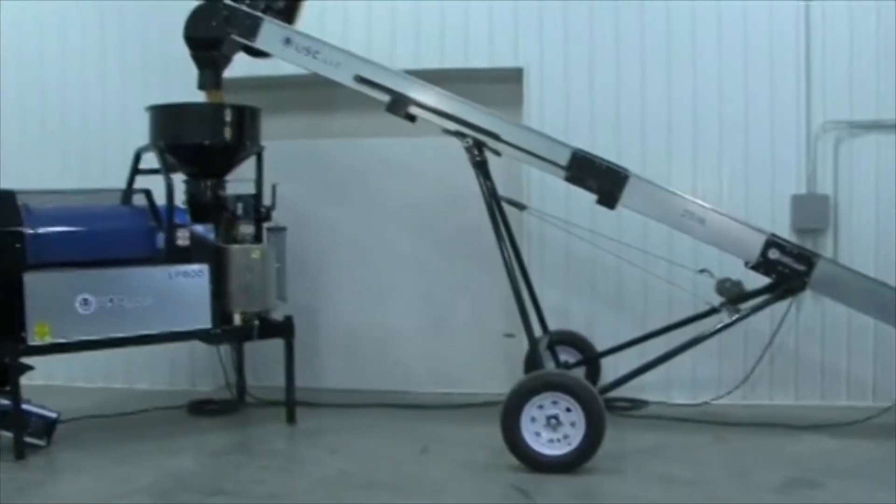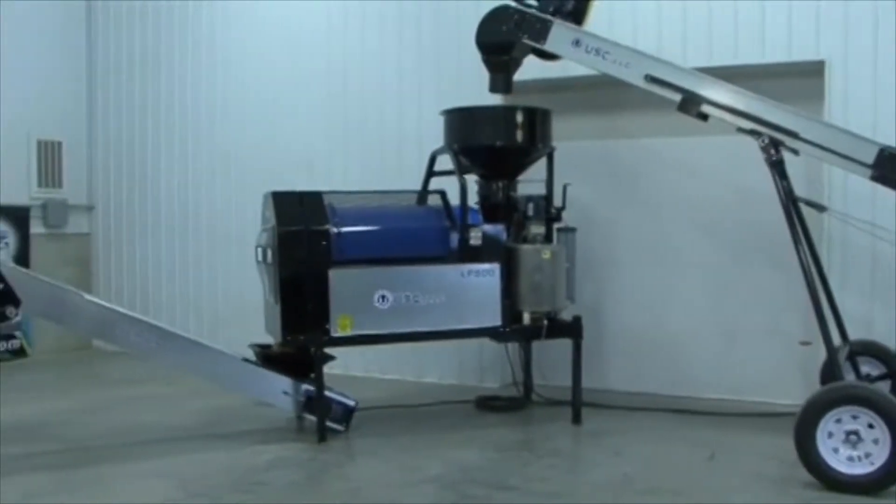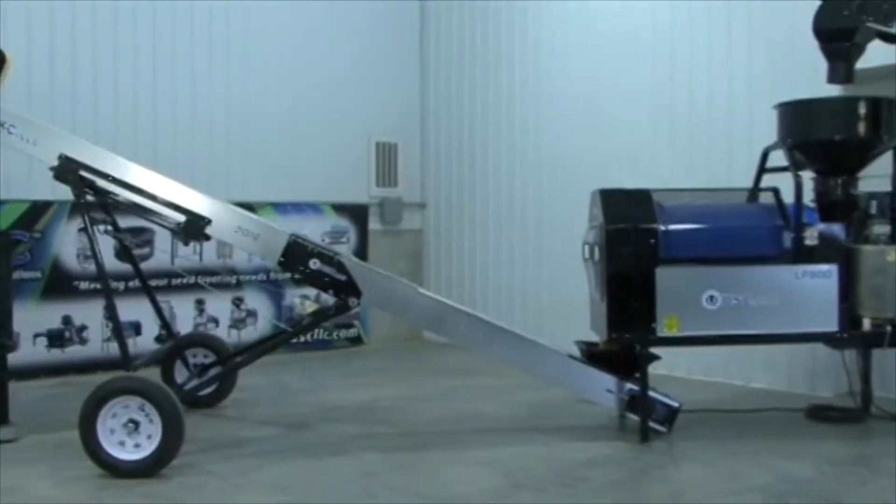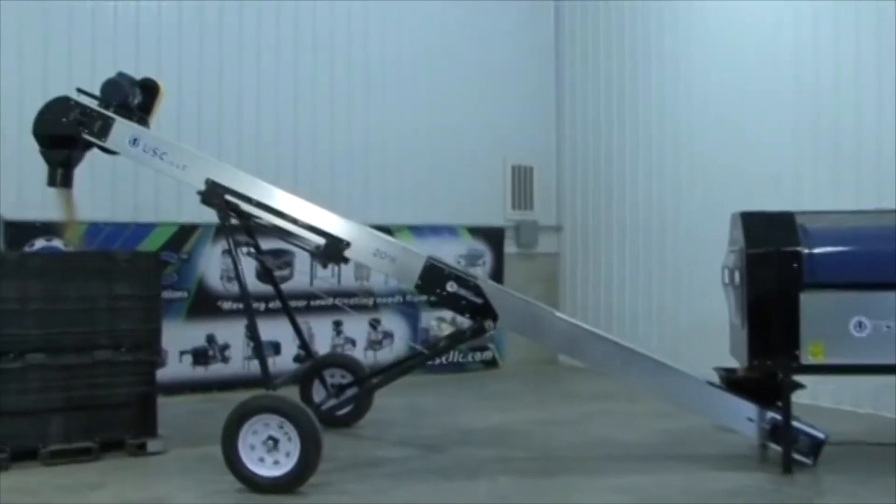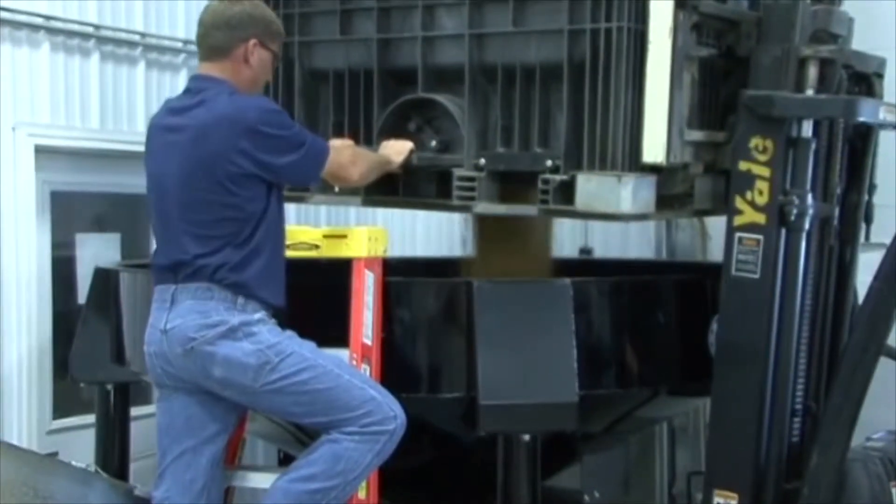To calibrate seed flow, you need to run a known weight of seed through the seed treater and time it to see how fast it passes through the treater. In our example, we will be using an LP800, two USC series 2000 belt conveyors, and an 80 unit USC surge hopper.